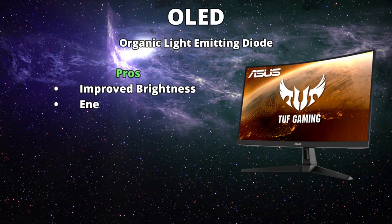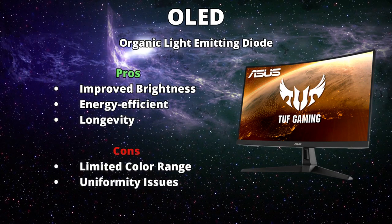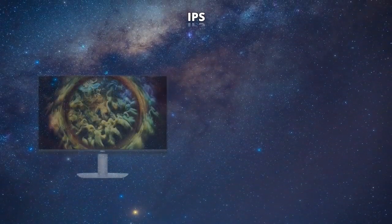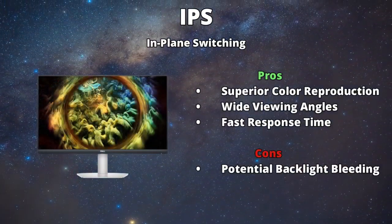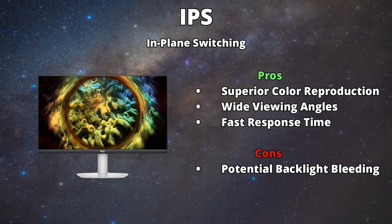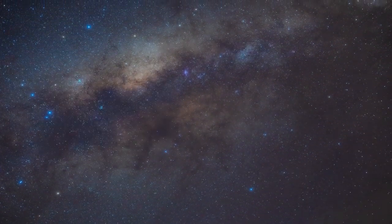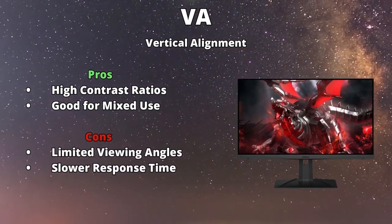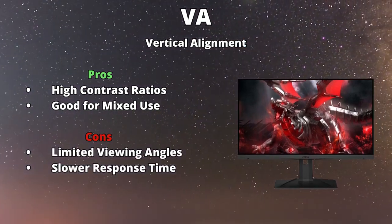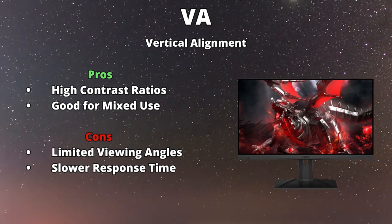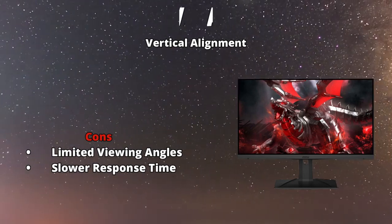OLED — Organic Light Emitting Diode — delivers perfect blacks, as OLEDs can switch off individual pixels, resulting in true blacks and high contrast ratios, along with wide viewing angles and even flexible form factors. IPS — In-Plane Switching — offers superior color reproduction, wide viewing angles, and fast response time, though some IPS panels may suffer from backlight bleeding around the edges of the screen. VA — Vertical Alignment — panels can achieve excellent contrast ratios, resulting in deeper blacks and better image depth, but may suffer from color shifts at extreme angles and can be slower than IPS or TN panels.